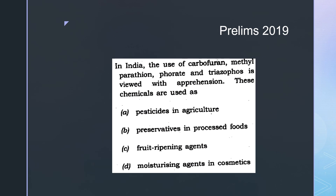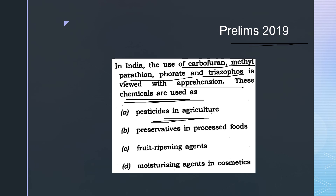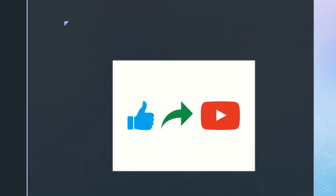A relevant UPSC Prelims 2019 question asked: 'In India, the use of carbofuran, methyl parathion, phorate, and triazophos is viewed with apprehension. These chemicals are used as?' The answer was that they are used as pesticides in agriculture. This is just a hint that UPSC is asking such questions on pesticide names. Please include these chemical names in your notes. Like this video, share it with your friends, subscribe to the channel, and write your feedback in the comment section. Thank you.